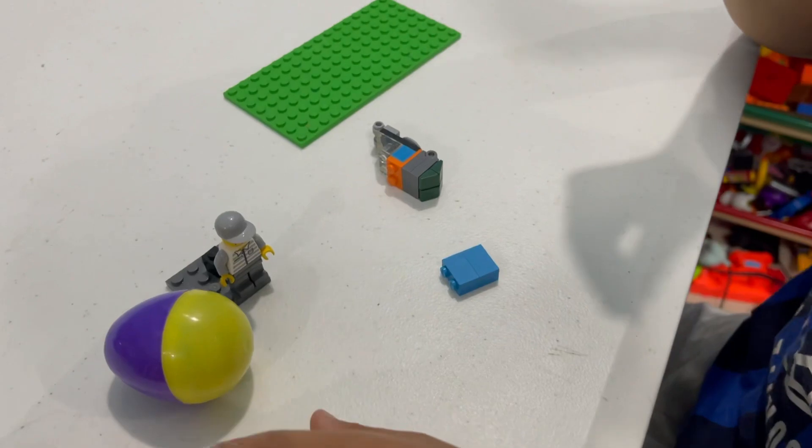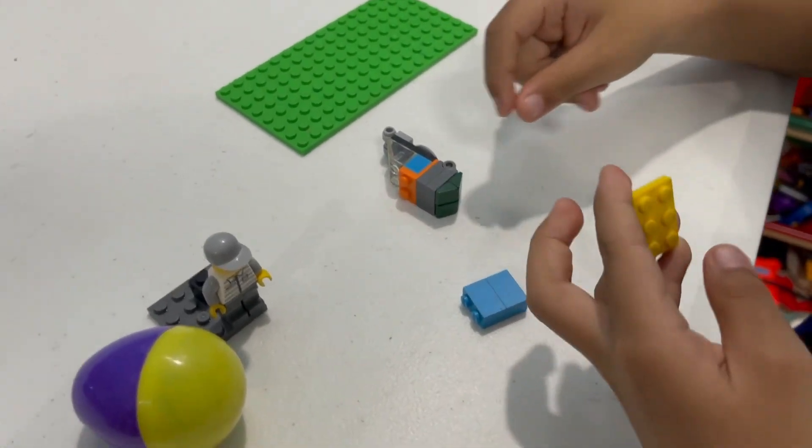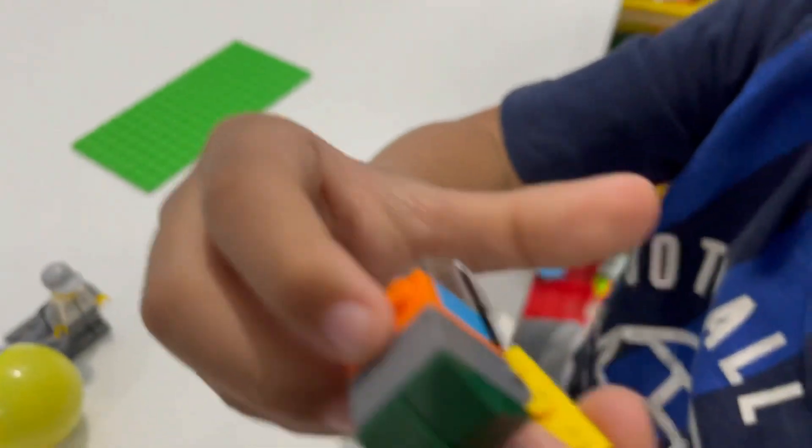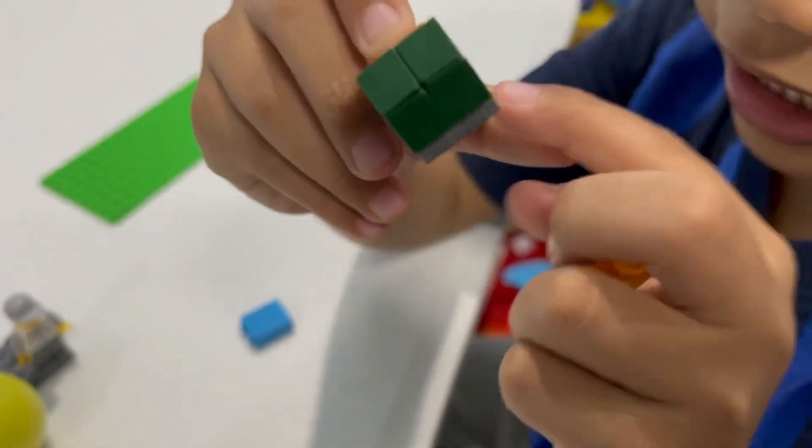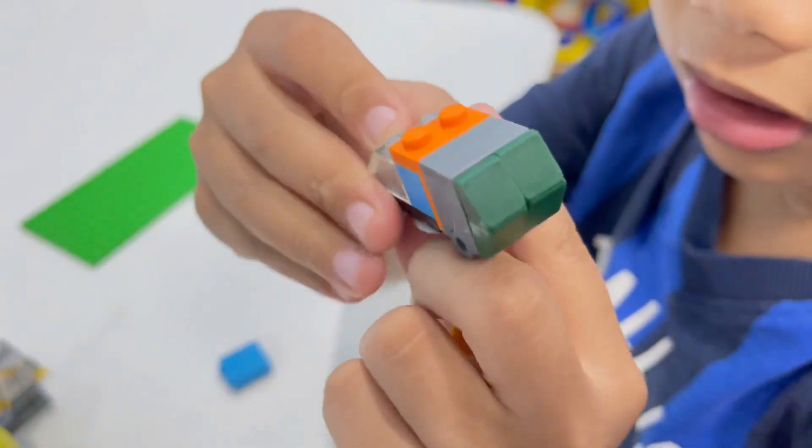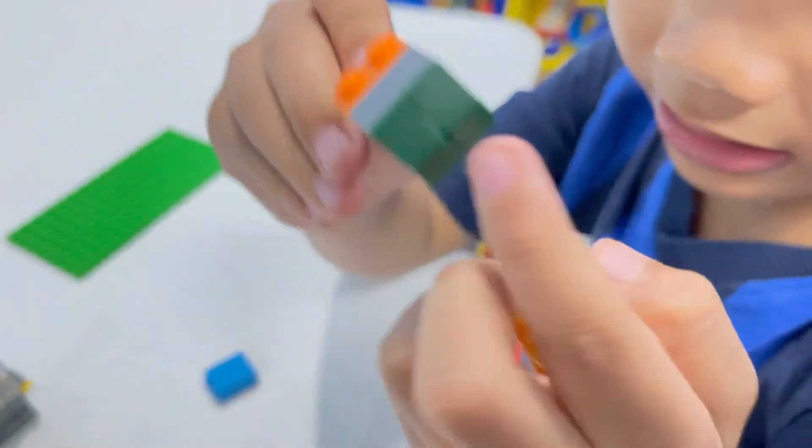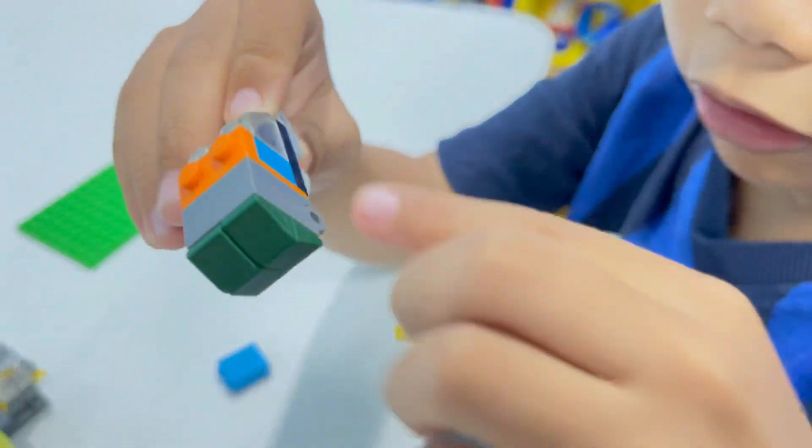And you can choose any color base you like in your Lego box. Find any short bases like this, or black, any color you like.